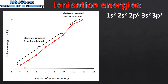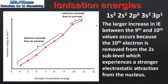Next we'll look in more detail at the fourth to the eleventh ionization energies for the aluminium atom. What is noticeable is the larger increase in ionization energy between the ninth and tenth ionization energies. This occurs because the tenth electron is removed from the 2s sub-level, which experiences a stronger electrostatic attraction from the nucleus. These two electrons removed from the 2s sub-level provide evidence for the existence of sub-levels within the atom.